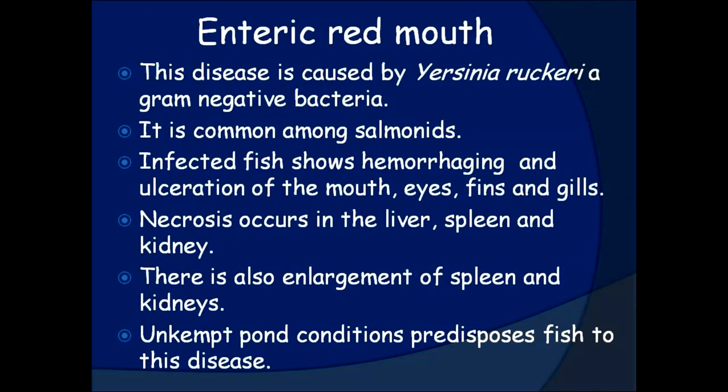Enteric red mouth. This disease is caused by Yersinia ruckeri, a gram-negative bacteria. It is common among salmonids. Infected fish show hemorrhaging and ulceration of the mouth, eyes, fins, and gills. Necrosis occurs in the liver, spleen, and kidney. There is also enlargement of the spleen and kidneys. Unkempt pond conditions predispose fish to this disease.